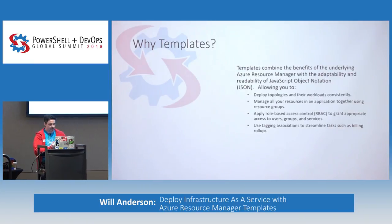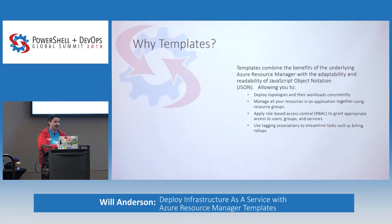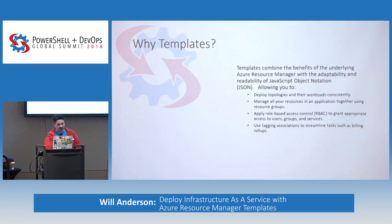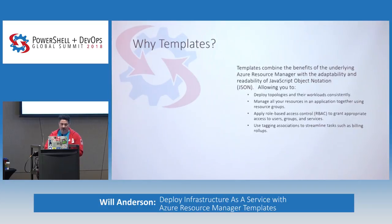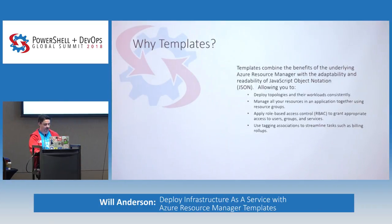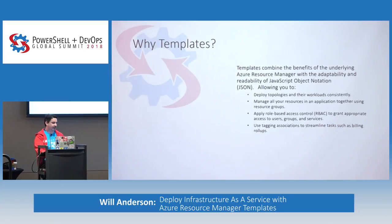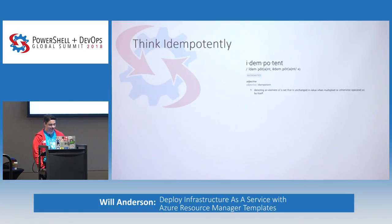Templates allow you to deploy topologies and workloads consistently. You can make things idempotent — once you have a JSON template, you can stamp it out in basically any region globally and it's going to look exactly the same. You manage all your resources in an application together in resource groups. You can apply RBAC and use tagging to streamline things like billing and asset management.